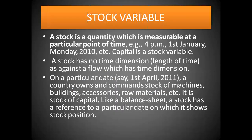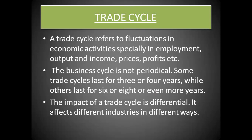Trade cycle is a fluctuation in economic activities, especially in employment, output, income, price, and profits. It's not very periodical — it can last three or four years for some industry, and six to eight years for another. The impact of trade cycle is differential, which means it affects different industries in different ways. We cannot say that a certain event impacting one industry will impact another industry in the same way, because every industry is of different nature.